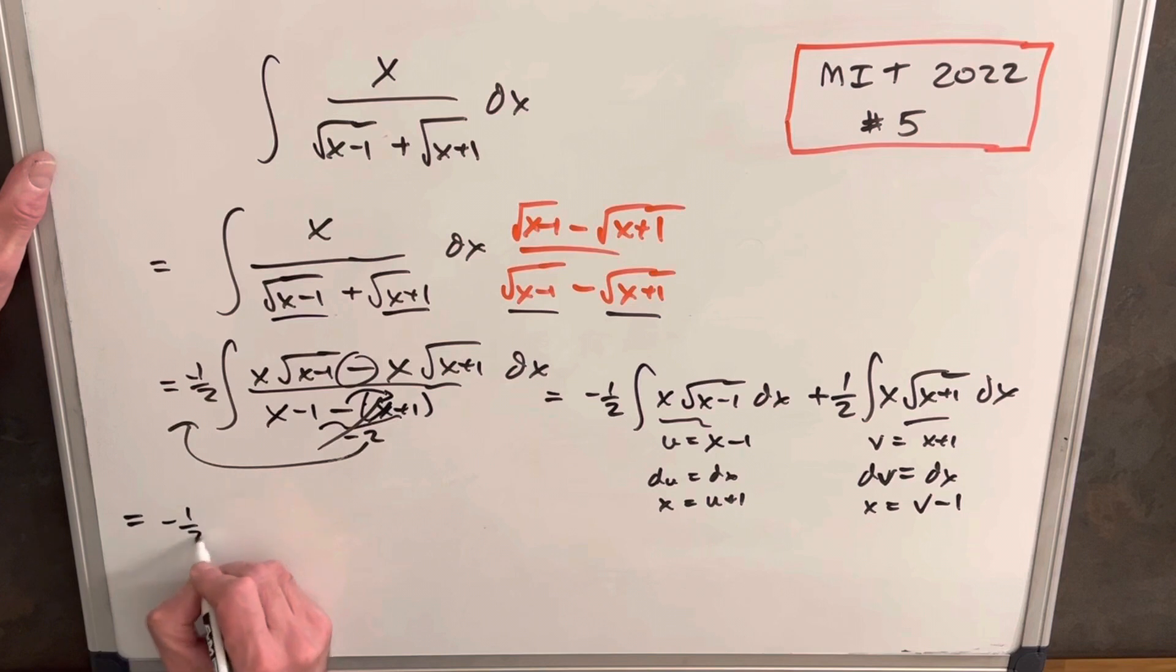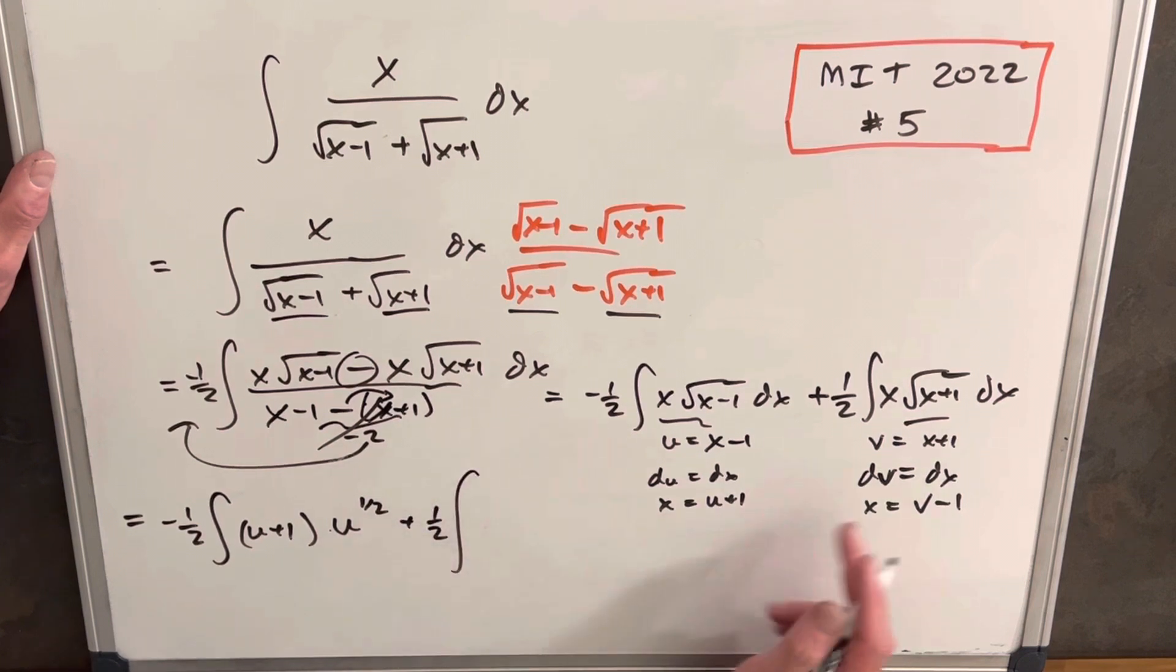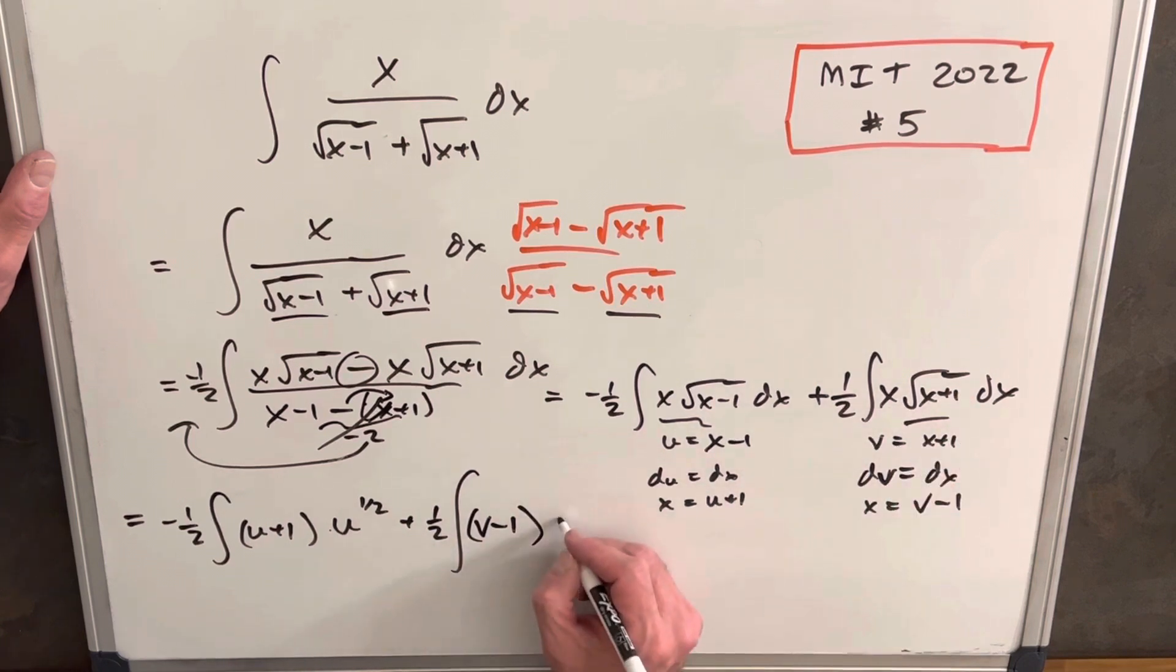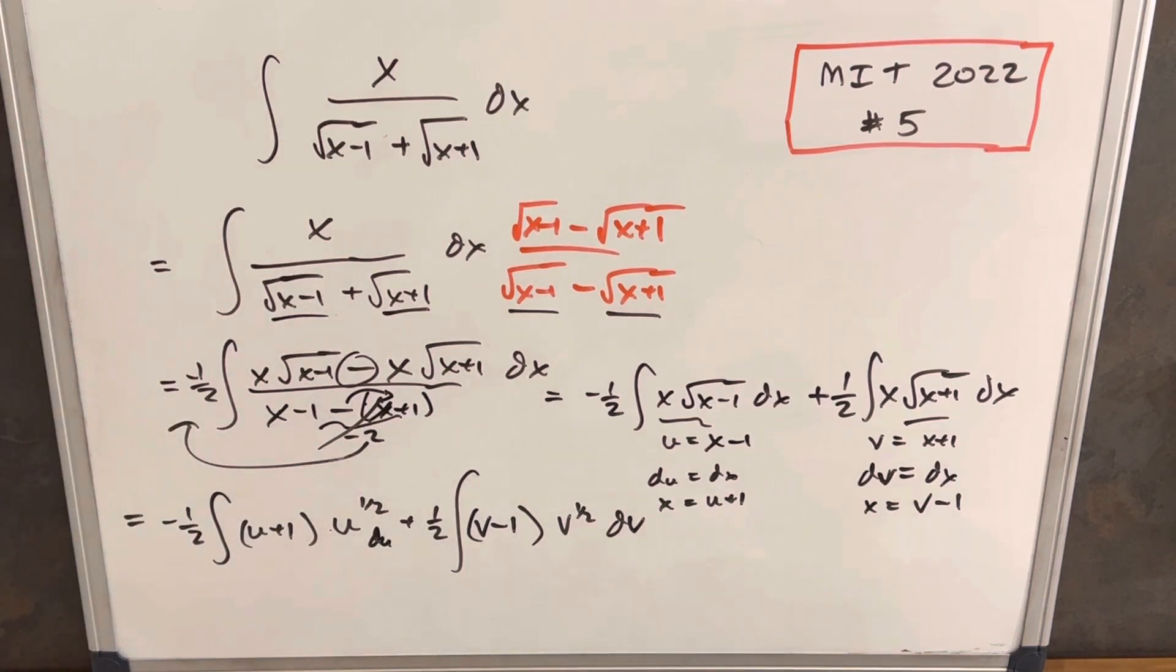We'll have our minus 1 half in front. Our x is u plus 1. Square root of x minus 1. So we're going to write this as u to the 1 half plus 1 half. Our x over here is going to be v minus 1. And then we're going to have v to the 1 half. And, oh, sorry, I forgot. Here we have a du and here we have a dv because I always like to forget the dx.